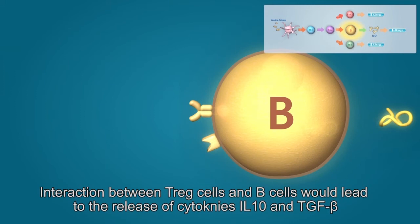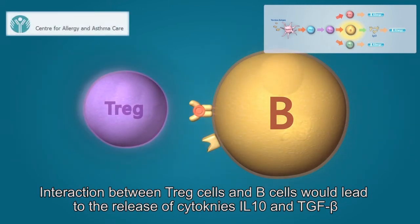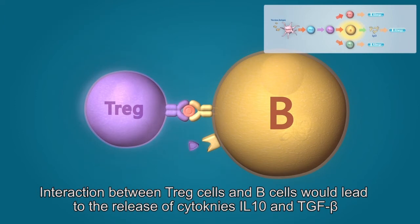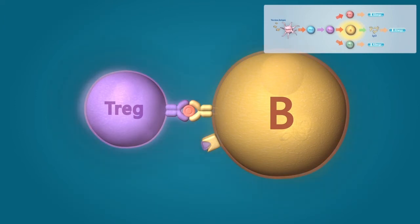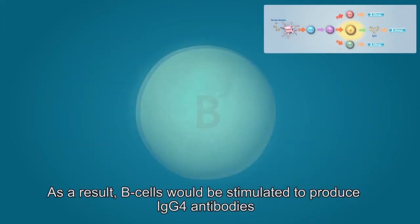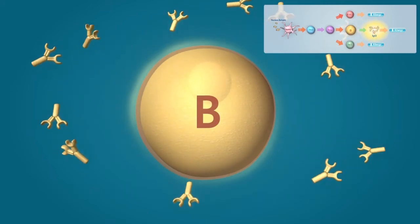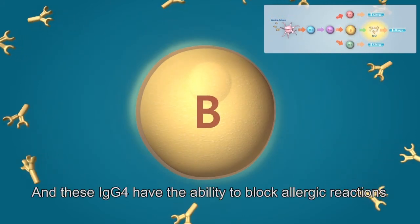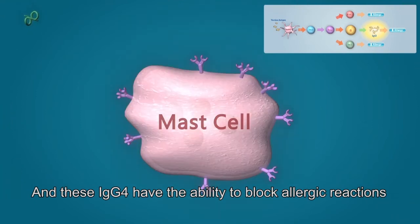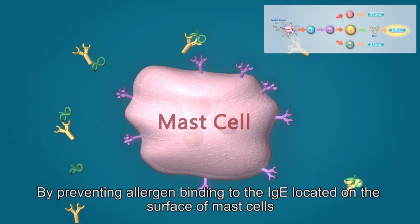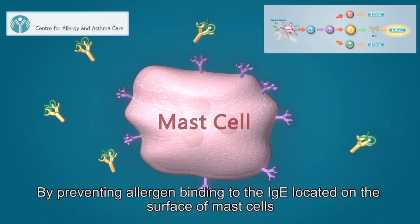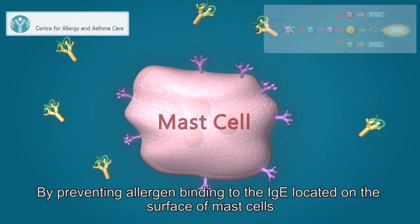These Treg cells can suppress Th2 cells and at the same time stimulate the growth of Th1 cells. Interaction between Treg cells and B cells will lead to the release of cytokines interleukin-10 and transforming growth factor beta. As a result, B cells would be stimulated to produce IgG4 antibodies, and these IgG4 antibodies have the ability to block allergic reactions by preventing allergen binding to the IgE located on the surface of mast cells.